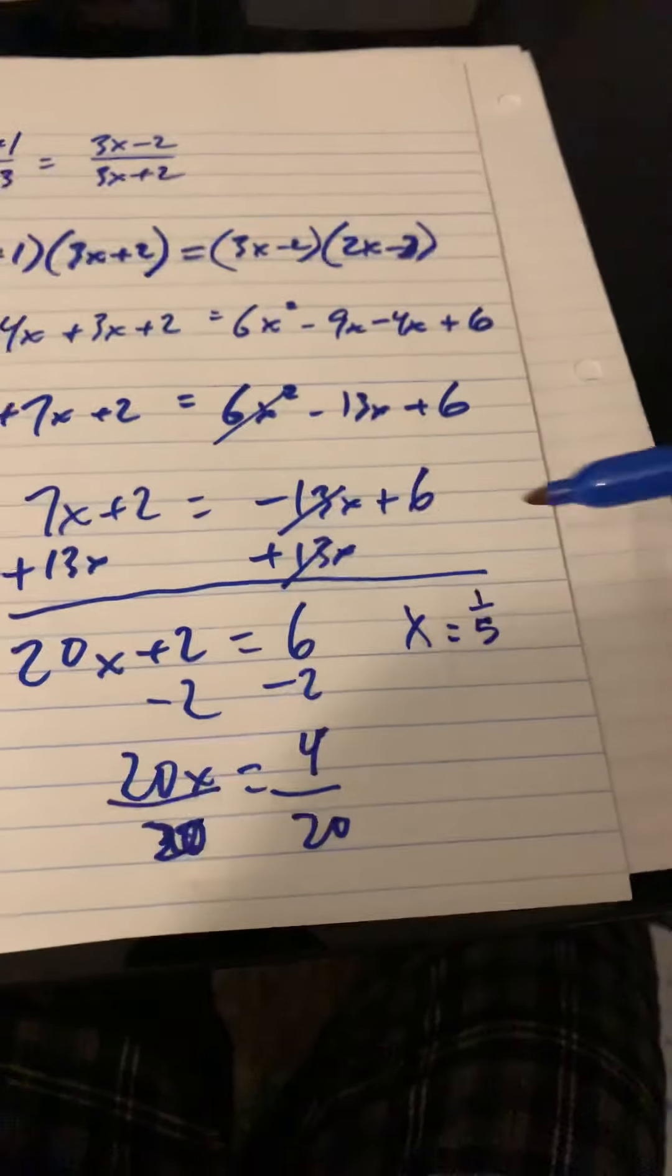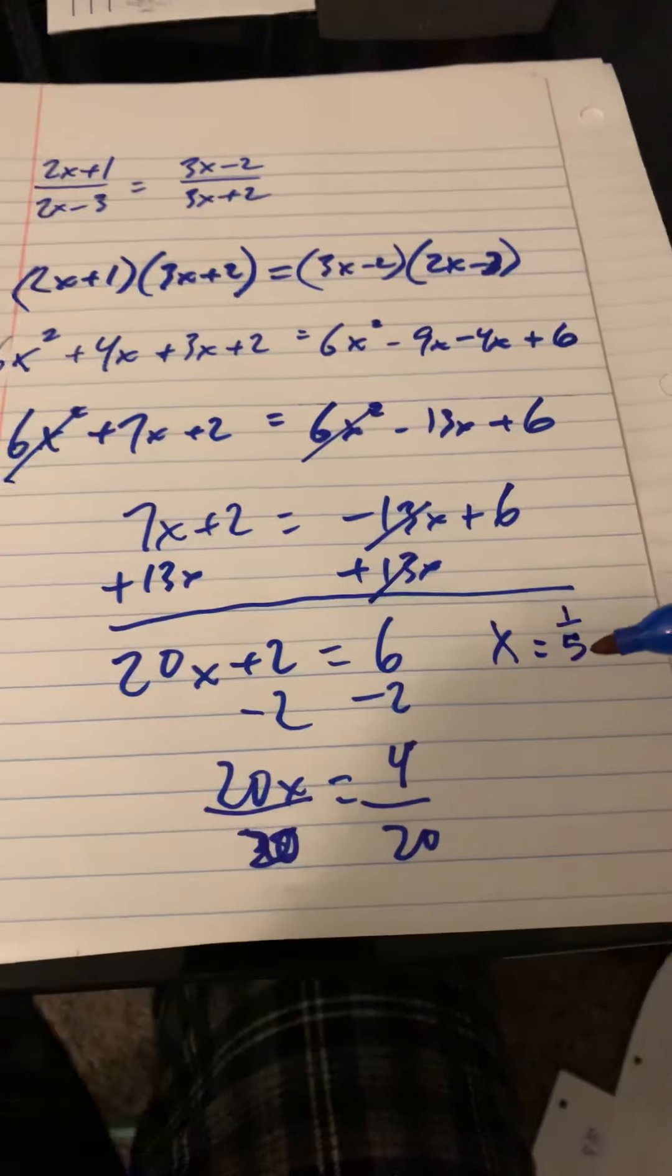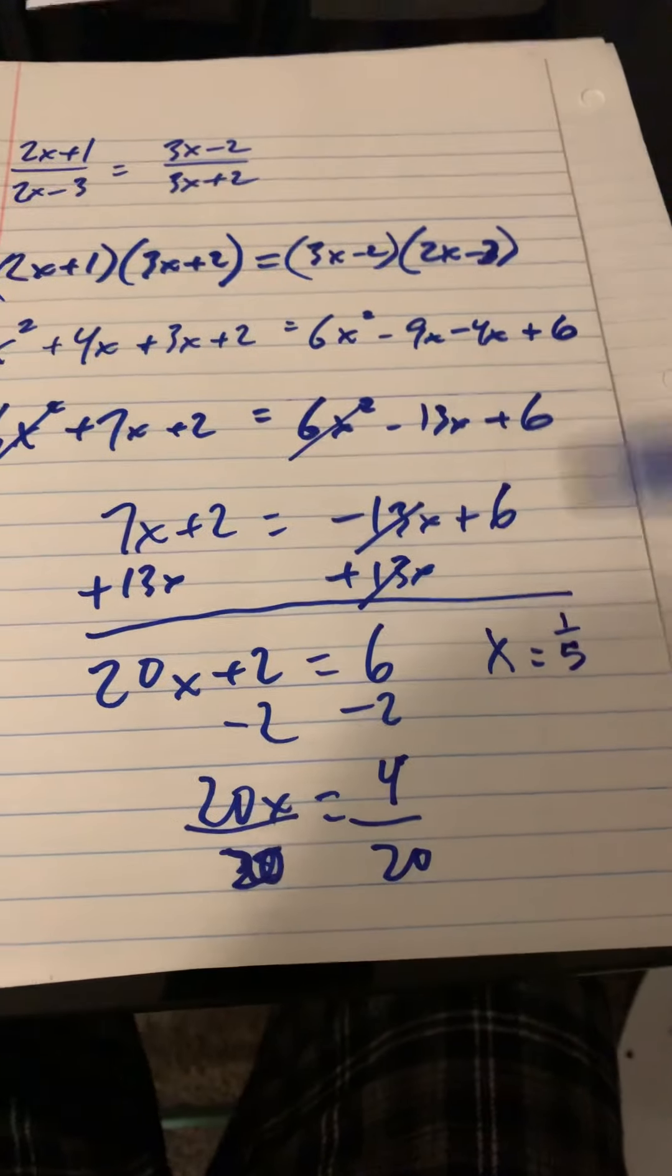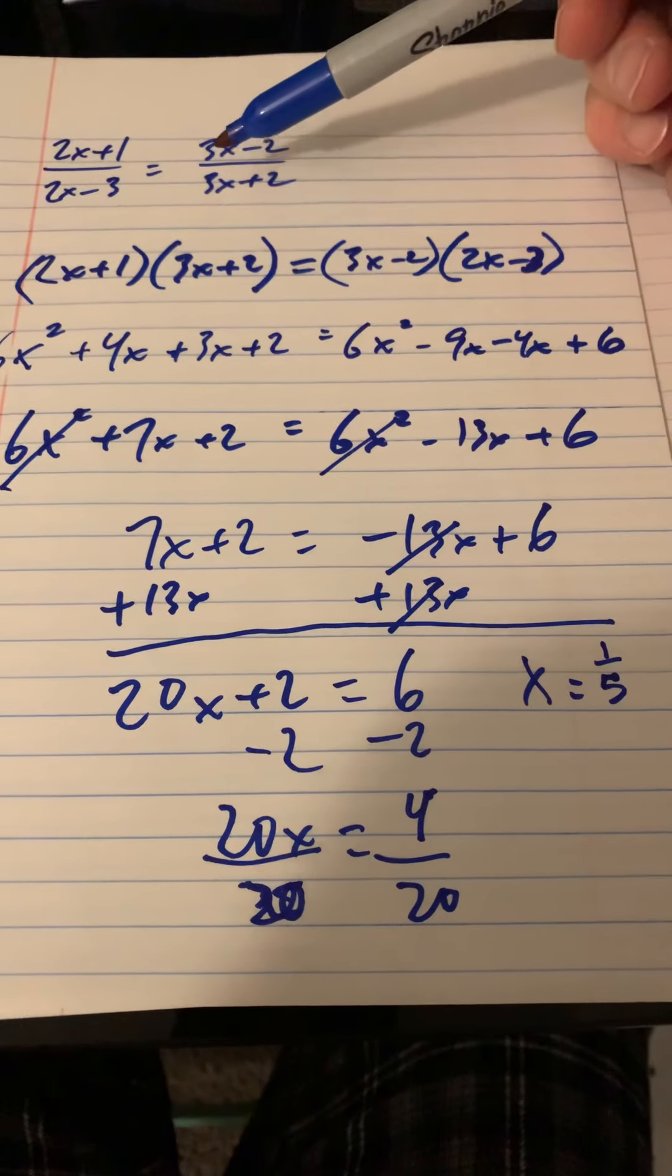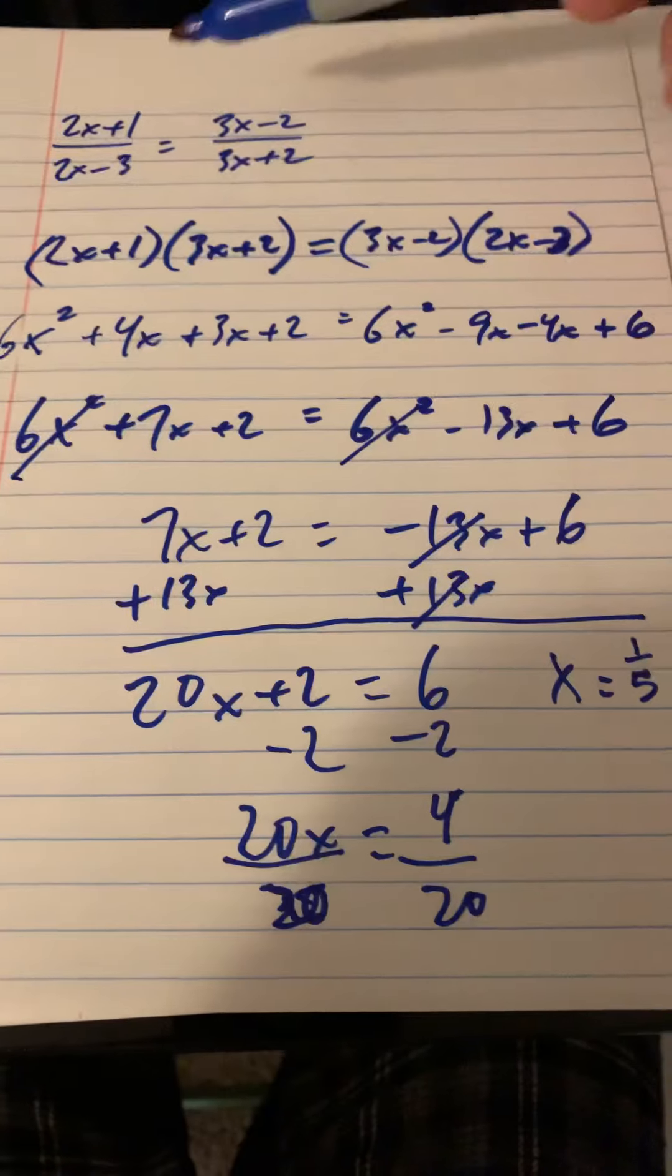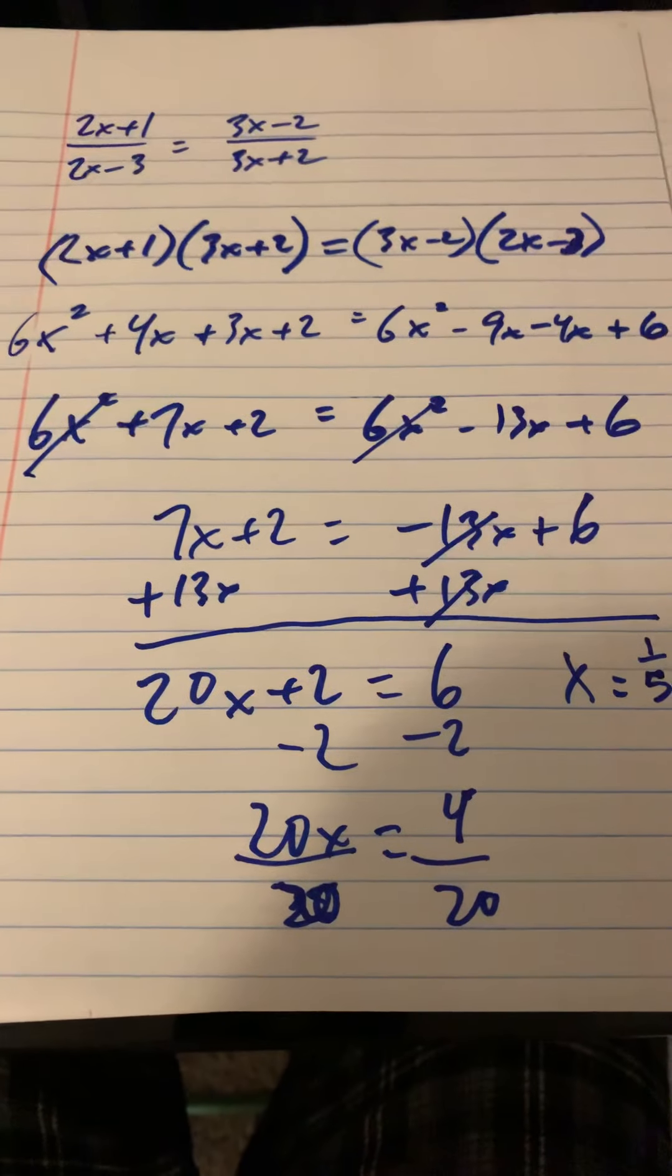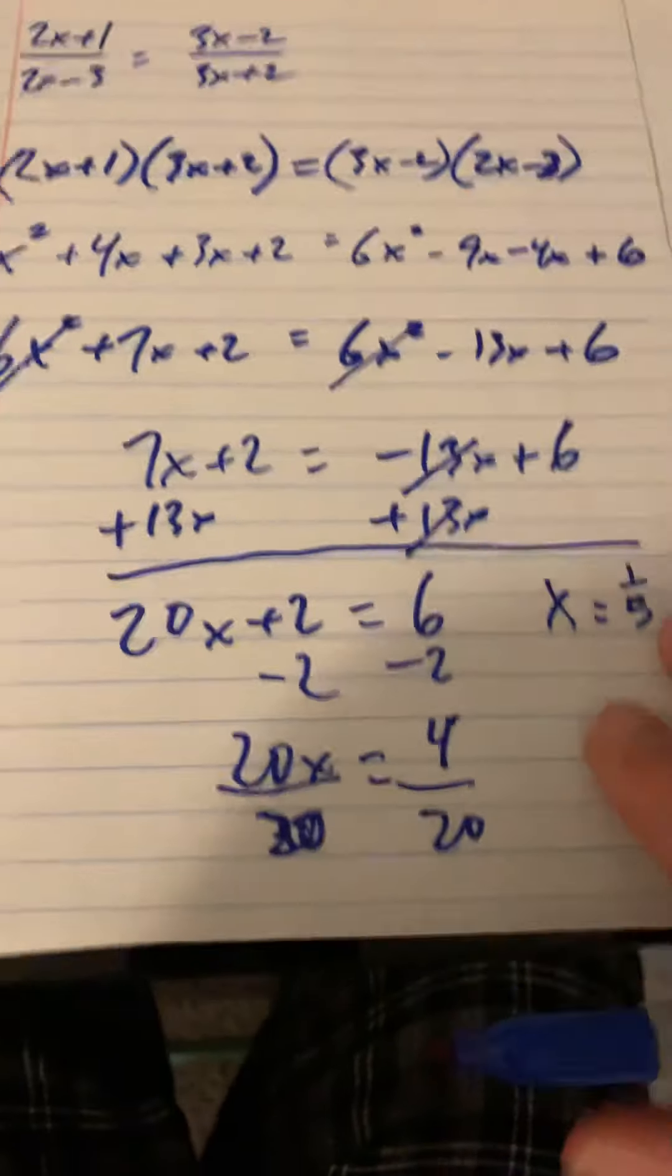And you can double check this on your own time, but if you take 1 fifth and plug it in for each of these x's and you go ahead and do all the math, then you'll find that these two fractions are actually equal to each other.